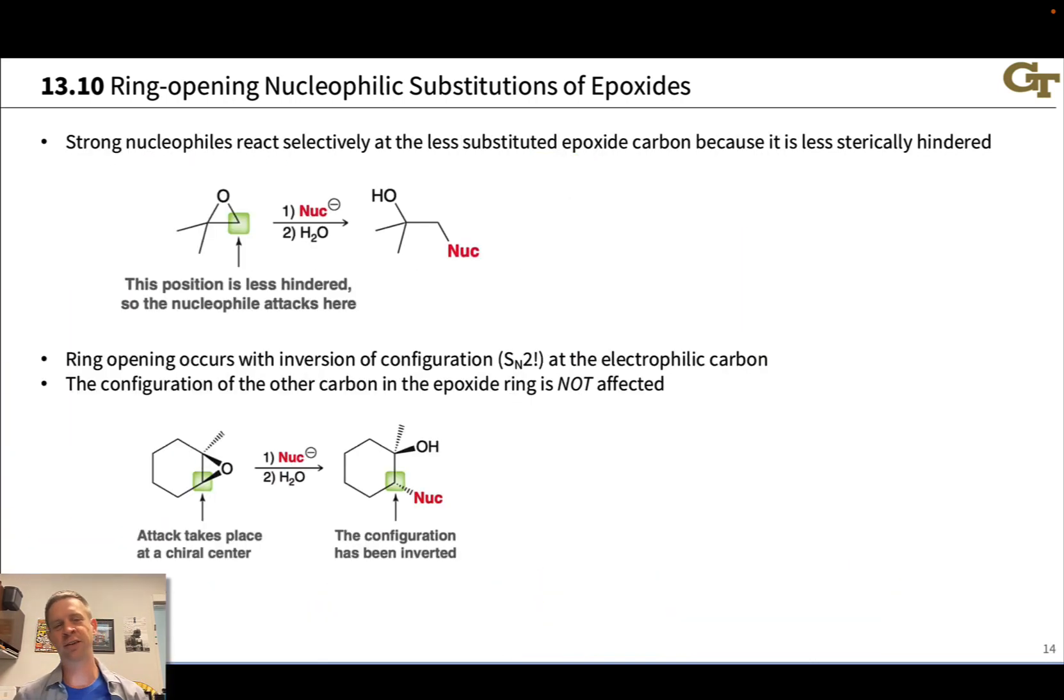Strong nucleophiles, in combination with epoxides, act through an SN2 mechanism, and so the regioselectivity and stereospecificity are entirely driven by what we already know about the SN2 mechanism, where it's very sensitive to steric effects. And so strong nucleophiles will react selectively at the less substituted epoxide carbon. It's less sterically hindered, so the nucleophile attacks there.